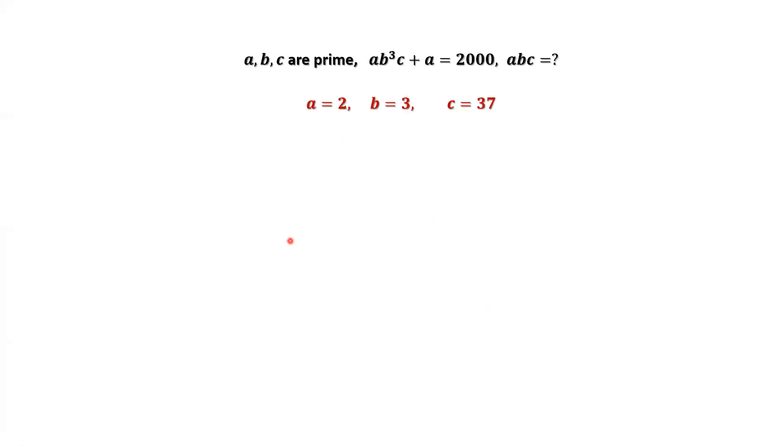Let's consider A equals 5. We replace A by 5. We have this equation. Both sides divided by 5, we have B to the power 3 times C plus 1 equals 400. Both sides minus 1, we have B to the power 3 times C equals 399. The prime factorization is 3 times 7 times 19.